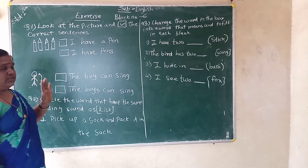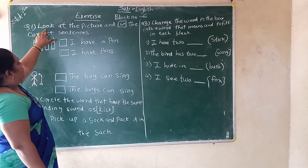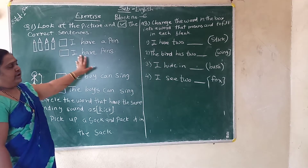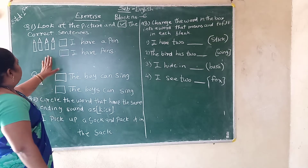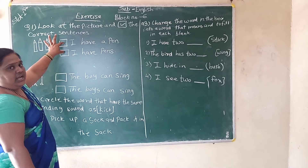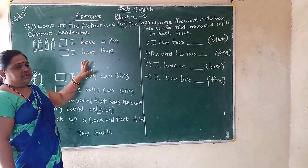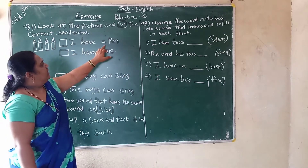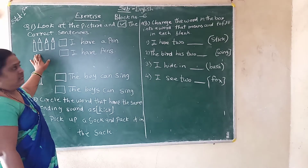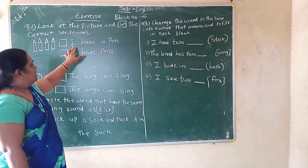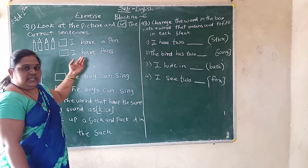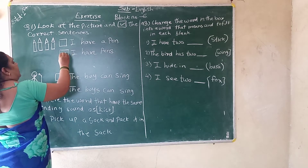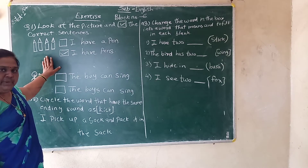Now see, friends. The first question is here: look at the picture and take the correct sentences. You have to see the picture and write the correct sentence. I have given two boxes here. From these, you have to choose which is the right sentence. So see here — 'I have a pen.' How many pens are there? Is 'I have pens' the correct answer? Yes, 'I have pens' is the correct answer.